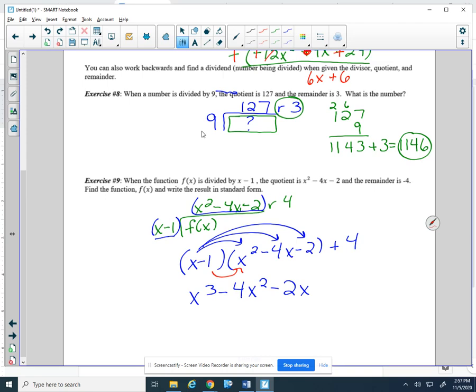Then we'll distribute here. So I have minus x squared. I'll put a 1x squared to help us add in a second. Plus 4x, and then plus 2.